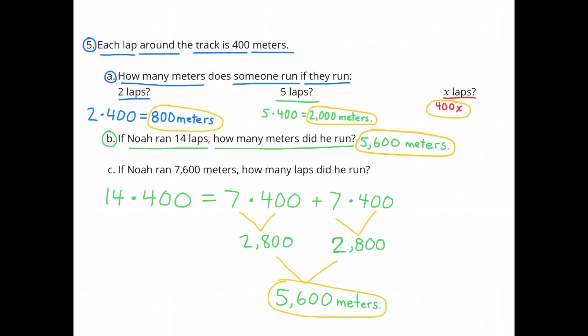B. If Noah ran 14 laps, how many meters did he run? 14 times 400 equals 5,600 meters. Breaking it down: 14 times 400 equals 7 times 400 plus 7 times 400. Since 7 times 4 is 28, 7 times 400 is 2,800. So 2,800 plus 2,800 equals 5,600 meters.